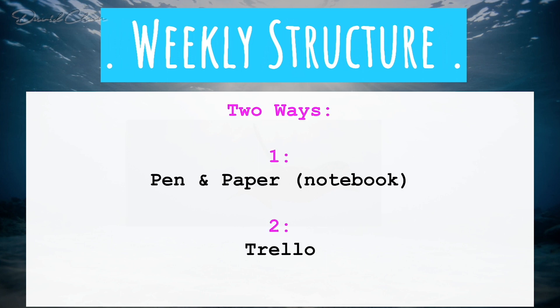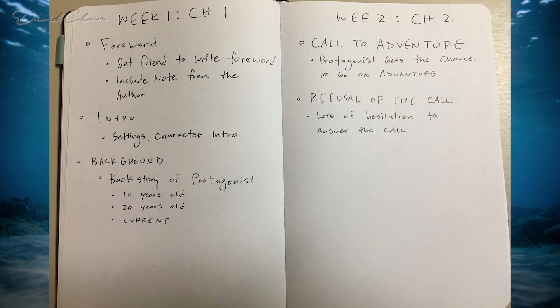There are two ways to do this: the good old-fashioned pen and paper method, where you use a notebook and write out your weekly structure, or an online tool called Trello, which is free. I'll leave a link in the resources below. Let's look at the pen and paper way first.